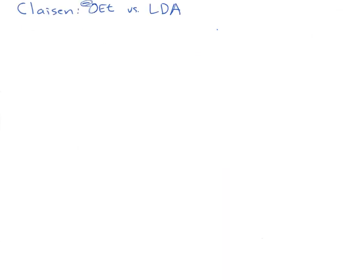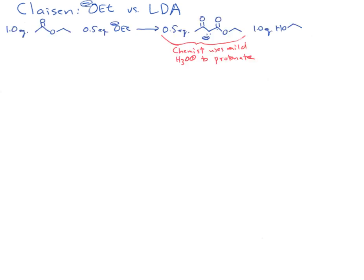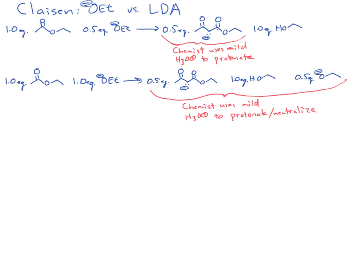Looking at the Claisen reaction and comparing ethoxide to LDA: if we have half an equivalent of ethoxide added to an ester, we'll end up with our deprotonated beta-ketoester product and one equivalent of ethanol. Just like we saw with excess base in the aldol reaction, a chemist will have to use mild acid to generate the beta-ketoester product. If we add one equivalent of ethoxide, we get the exact same products in the same amounts, but there's half an equivalent of ethoxide left over.